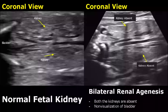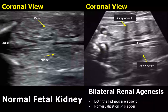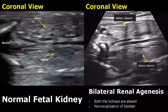In bilateral renal agenesis, there is absence of both kidneys, and it is a lethal condition. Here we cannot see any kidney on either side.